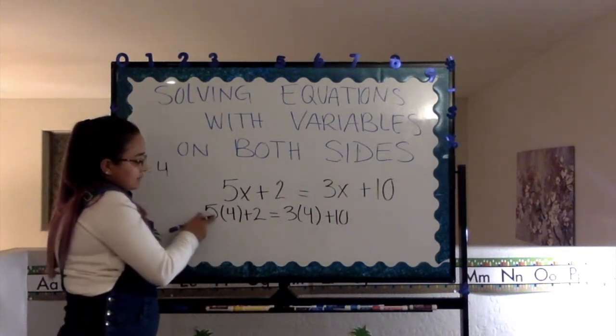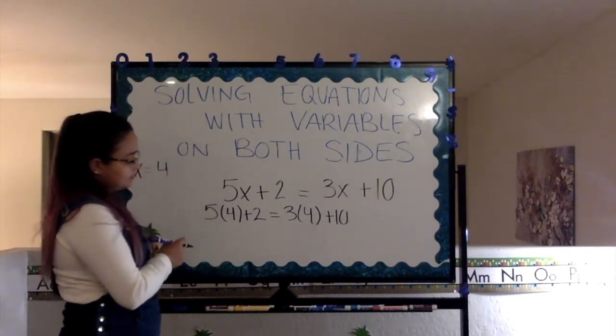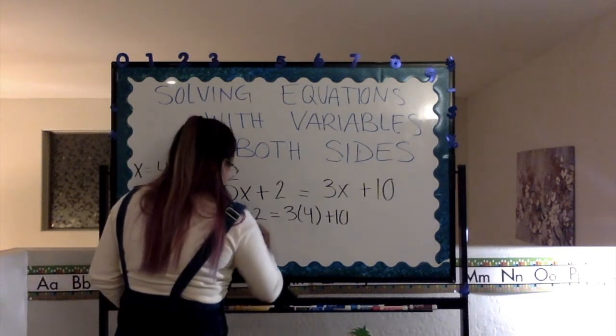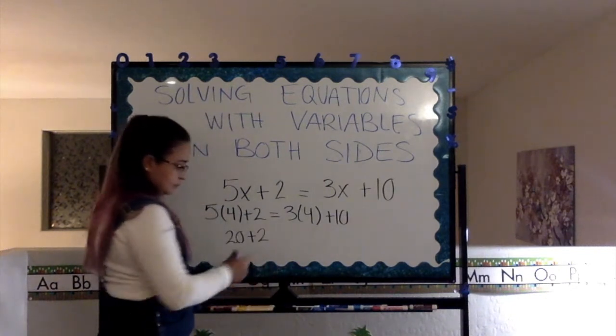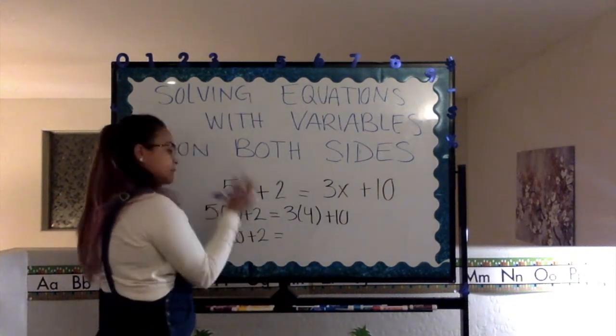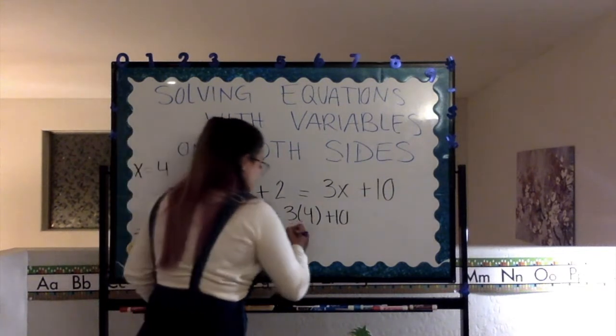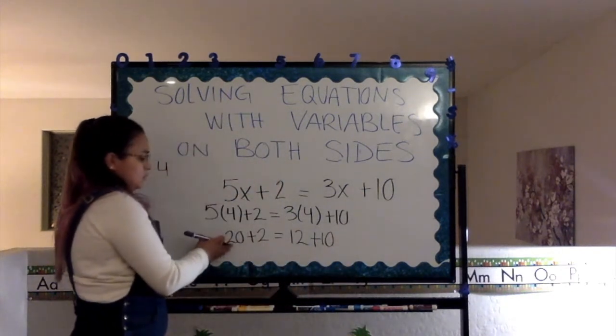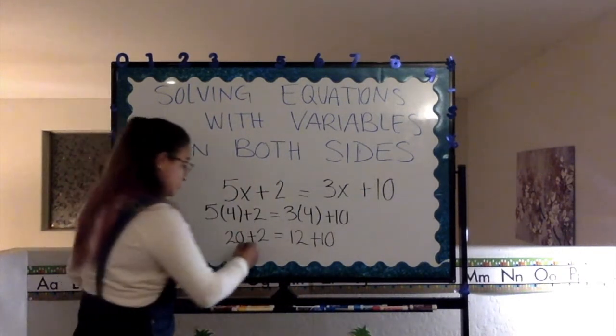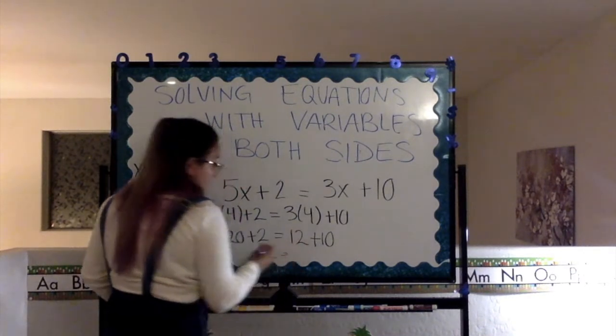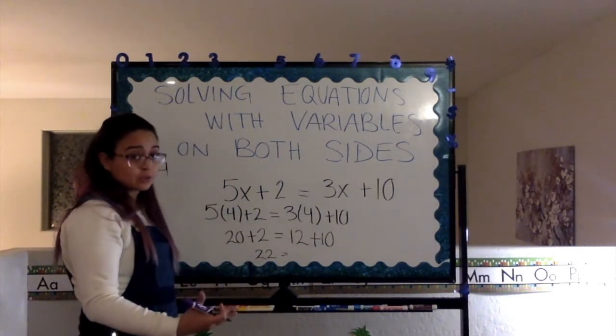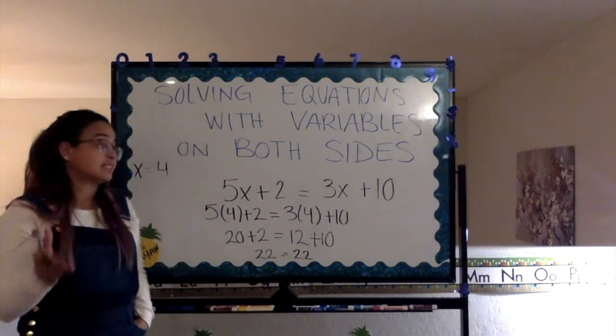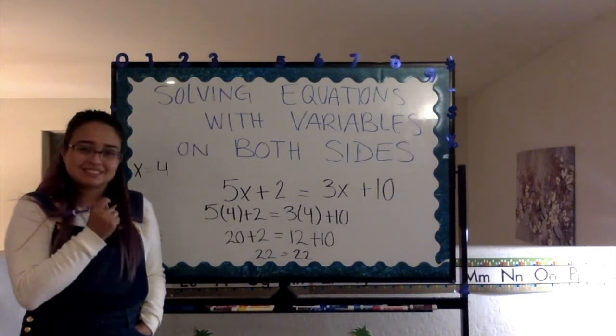What is 5 times 4? 20. Plus 2. Now, what is 3 times 4? It's 12. 20 plus 2 equals 22. And, 12 plus 10 also equals 22. That means that our math is correct.